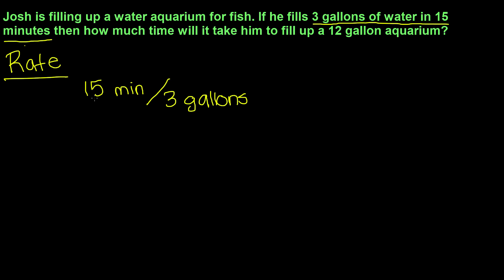So since we know the rate, which is 15 minutes it takes him to fill up 3 gallons, we can find the unit rate. To do so, first we have to make this into a fraction. So 15 minutes for 3 gallons can be represented as 15 over 3.